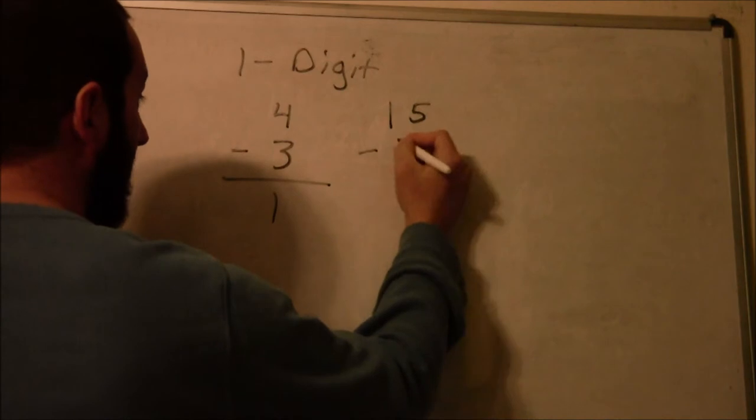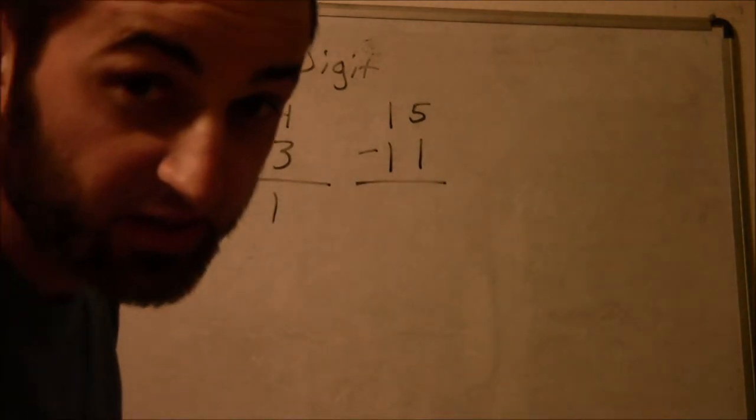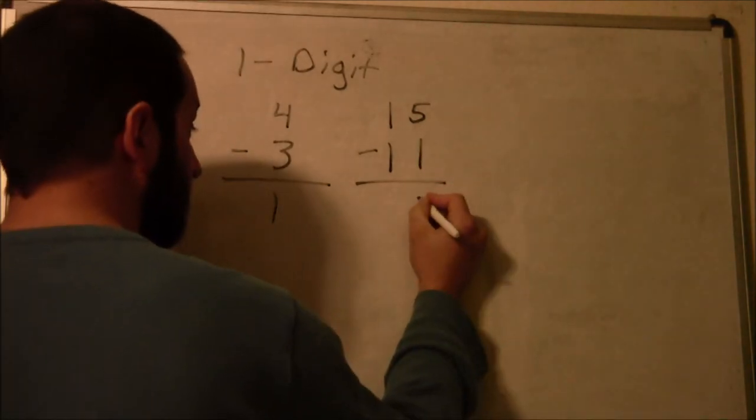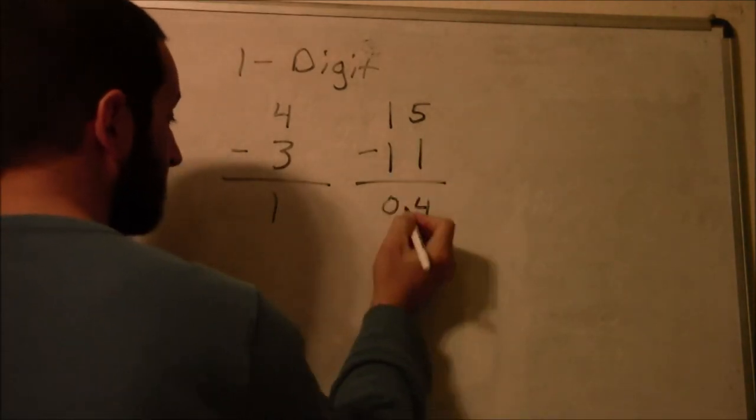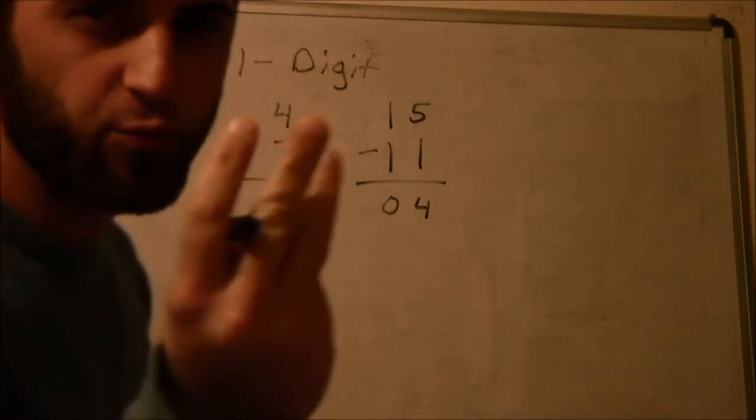15 minus 11. What do you think it is? Tick tock, tick tock. Four and zero, four. The answer is four. Three digits subtraction.